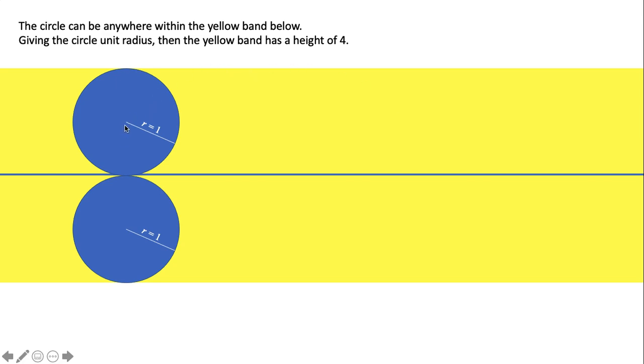So giving the circle unit radius, radius is one, then the yellow band has a height of four. Four radii, four times one is four.